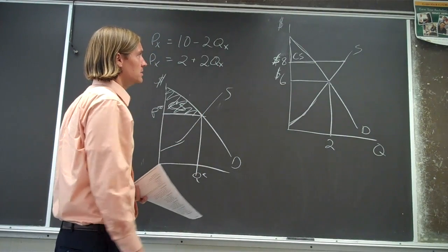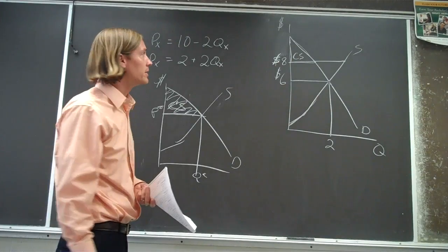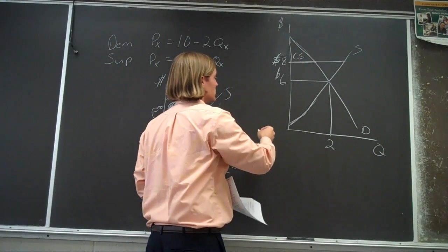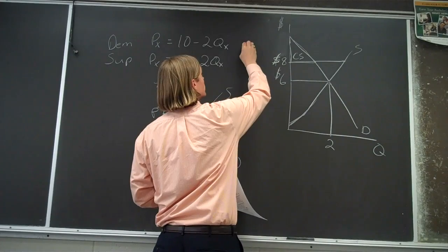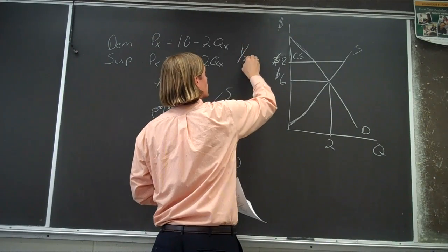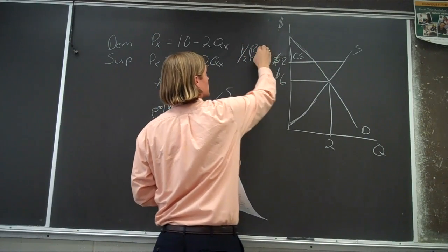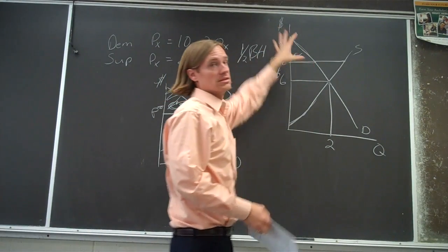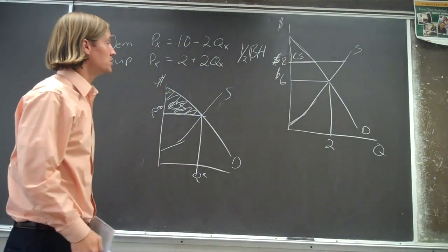So we've got to compute that area. So how do we figure out that area? We know that the area of a triangle is one-half base times height. But we've got to figure out the base and the height of that triangle. So how would you do that?